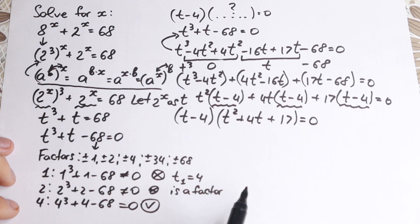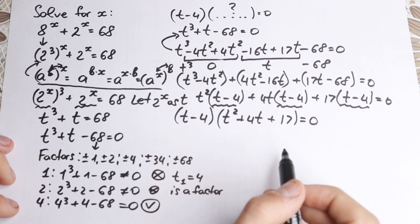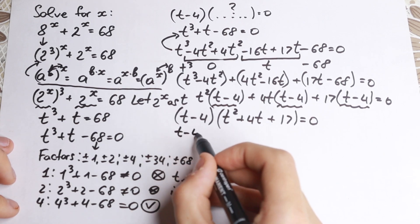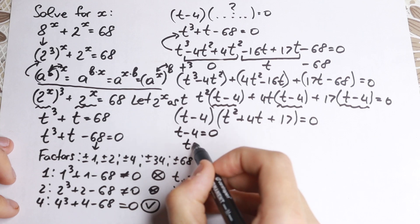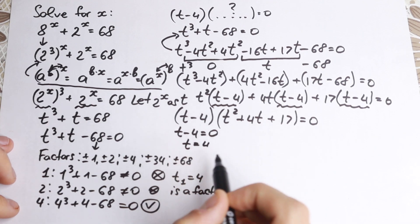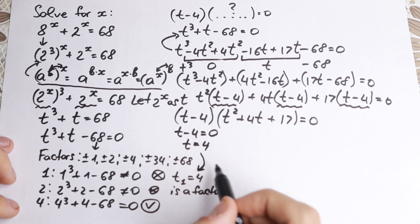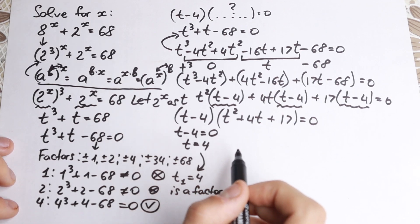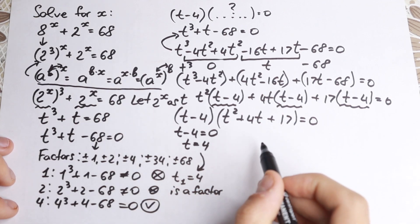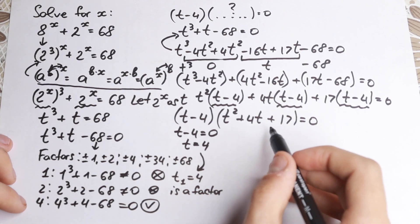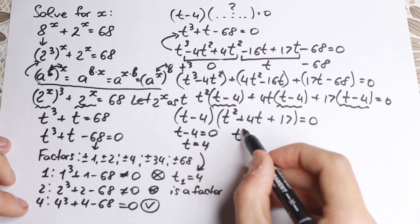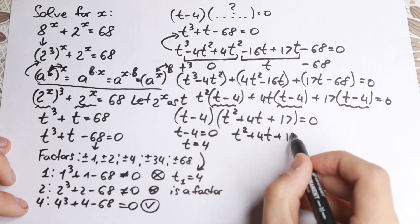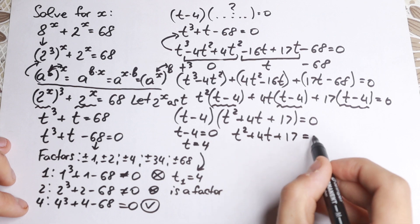And as a result we factor out (t minus 4), giving (t minus 4)(t squared plus 4t plus 17) equal to 0. Product equals zero: the first parentheses t minus 4 equal to 0 gives t equal to 4, which is our factor. And we have the second parentheses t squared plus 4t plus 17 equal to 0.